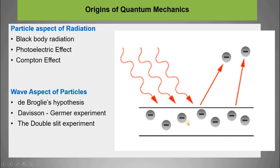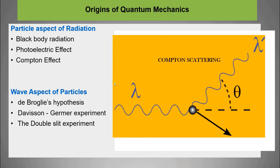In the photoelectric effect, light shines on a surface and electrons are emitted. Classical physics predicts certain outcomes, but it fails to explain the observations. Compton scattering is another example: an electron is hit by a photon, and the energy and frequency of the scattered photon change — classical physics cannot account for this through particle-particle scattering.